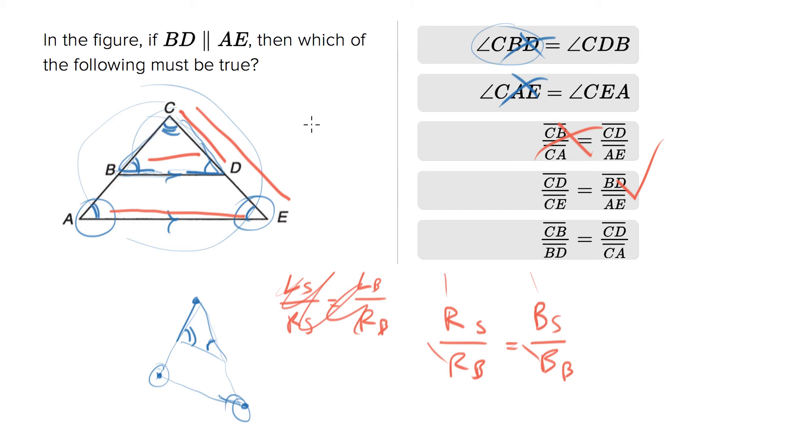I'm going to check the other one just to be safe in case you picked answer choice five. So CB is the left side of the small over BD, bottom of the small. Does that equal CD right side of small? I can already tell this is wrong over CA, left side of the big. So no, that doesn't fit at all. So this is out.